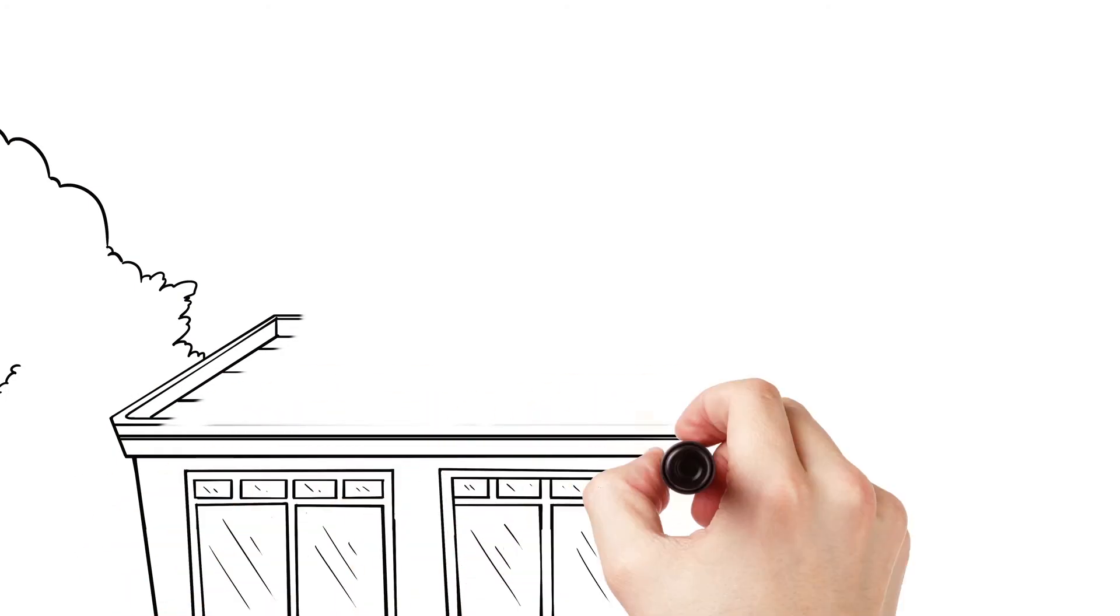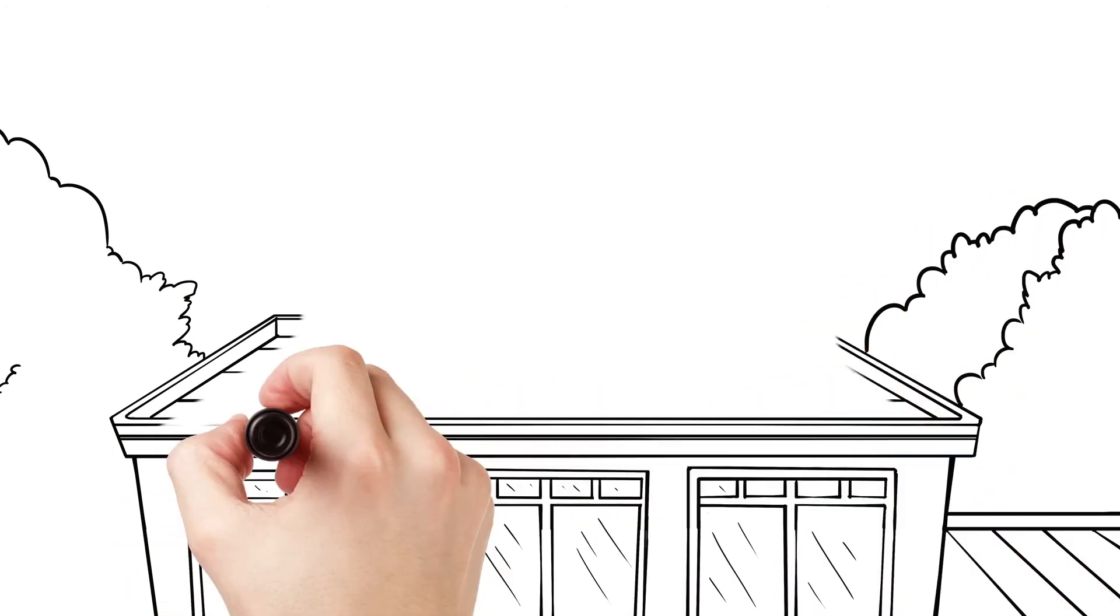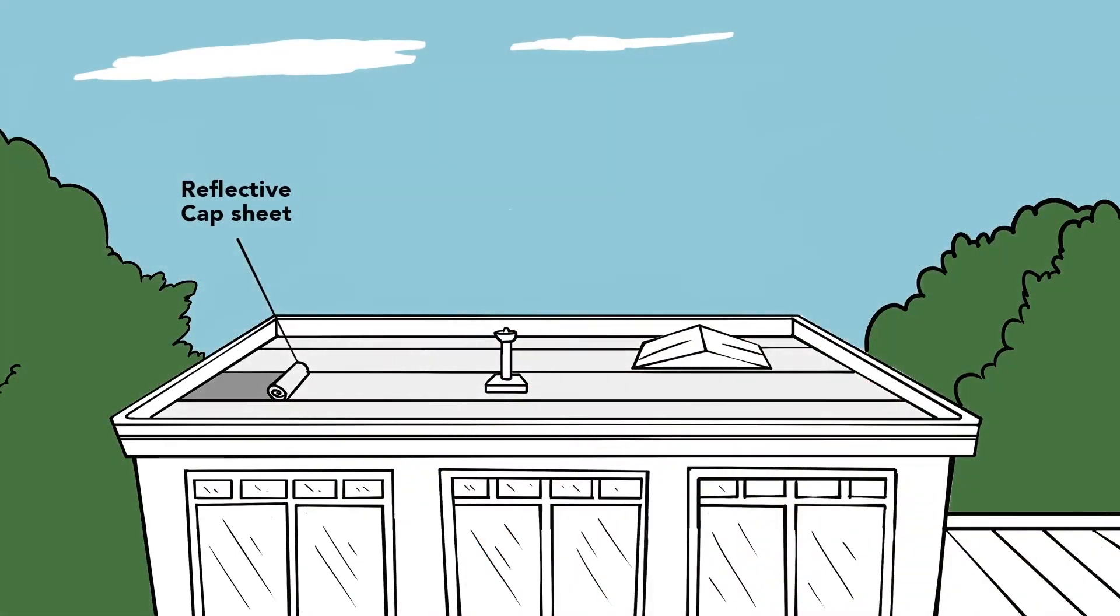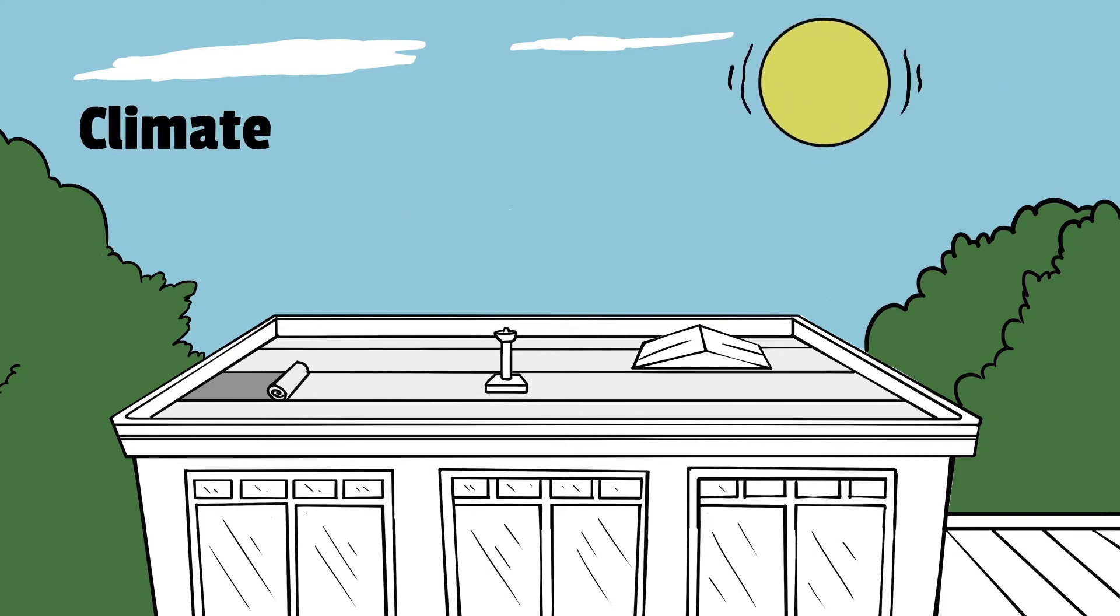Another way to improve a roof system's energy efficiency is to include a reflective cap sheet in your design. Reflective roofs may offer some benefits such as less heat and energy absorption into a building, depending on a number of factors including climate, roof system, insulation, and design.